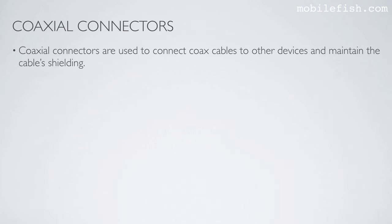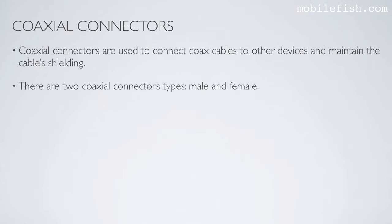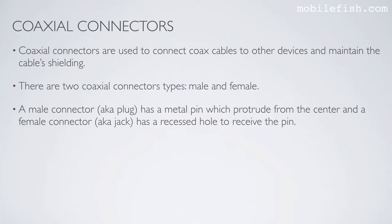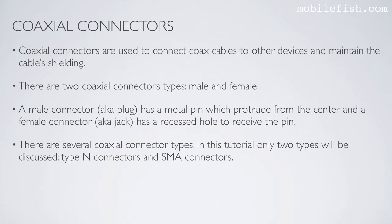Coaxial connectors are used to connect coax cables to other devices and maintain the cable shielding. There are two coaxial connector types: male and female. A male connector, also known as a plug, has a metal pin which protrudes from the center, and a female connector, also known as a jack, has a recessed hole to receive the pin. There are several coaxial connector types; in this tutorial only two will be discussed: Type N connectors and SMA connectors.